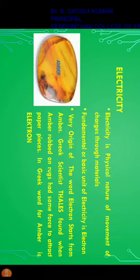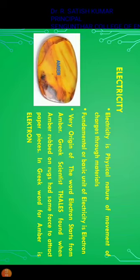Electricity is defined as the physical nature of movement of charges through materials. The term 'physical nature' is used because electricity behaves differently with different materials — it develops heat in certain materials, light in certain materials, and force in certain materials.